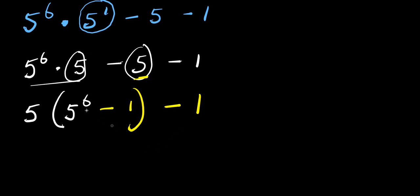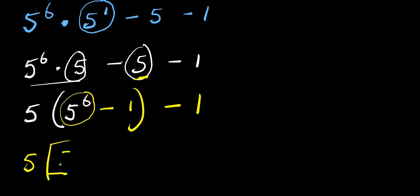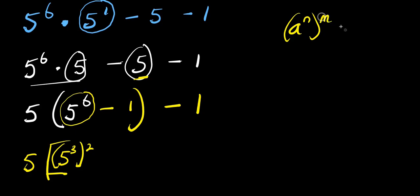From here, I can express 5 to the power of 6 as 5 to the power of 3, raised to the power of 2. So instead of writing 5 to the power of 6, I can write it as 5 to the power of 3 raised to the power of 2, because multiplying the exponents 3 times 2 gives 6. Then I have minus 1, and this is minus 1.